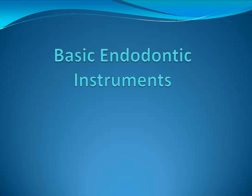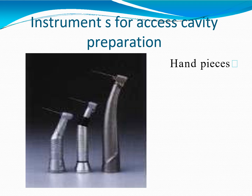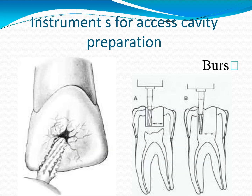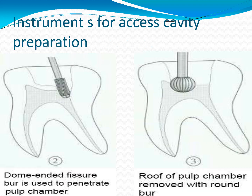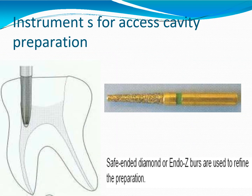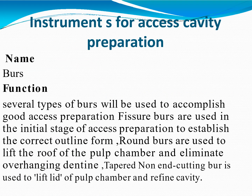Basic endodontic instruments for access cavity preparation include handpieces and burrs. Several types of burrs are used to accomplish good access preparation. Fissure burrs are used in the initial stage of access preparation to establish the correct outline form. Round burrs are used to lift the roof of the pulp chamber and eliminate overhanging dentine. Tapered non-end cutting burrs are used to lift the lid of the pulp chamber and refine the cavity.